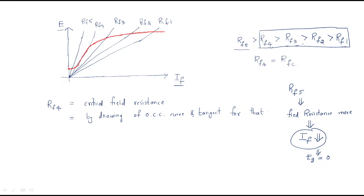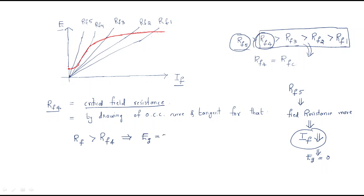At particular resistance values, EMF will be generated, but beyond a certain point it will not generate. So that last point — RF4 — is called the critical field resistance. Critical field resistance means: if we increase the field resistance beyond RF4, the generated EMF will become zero. Critical means the last point — that resistance at which the generated EMF becomes zero.